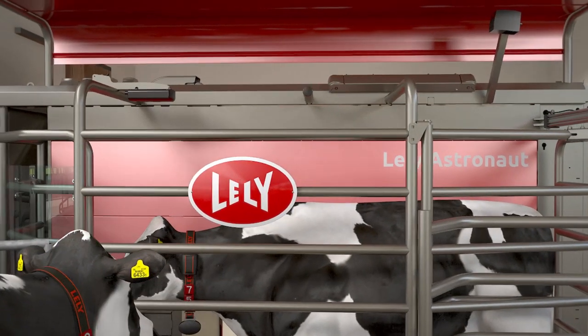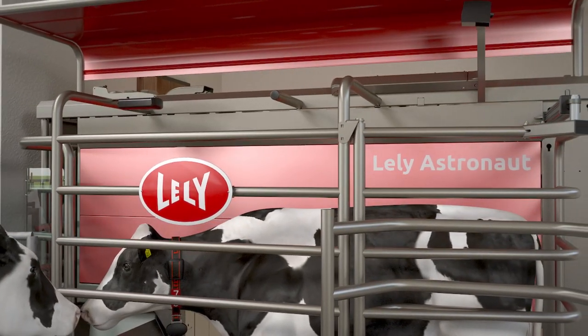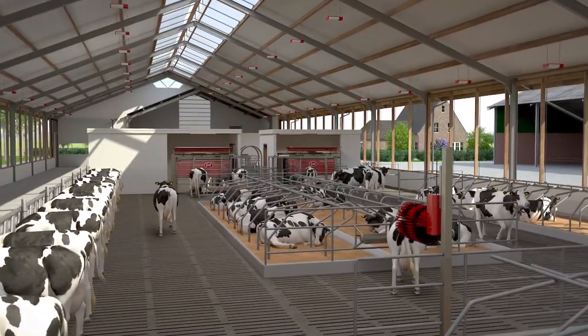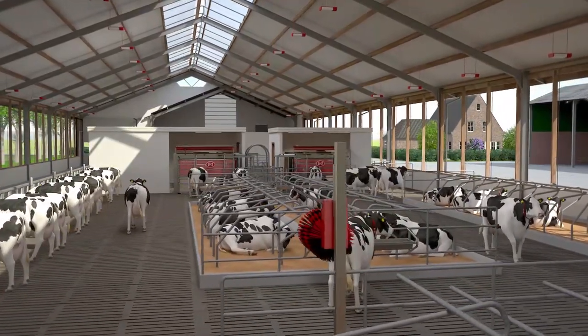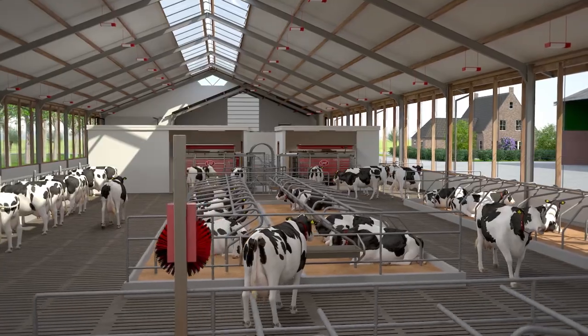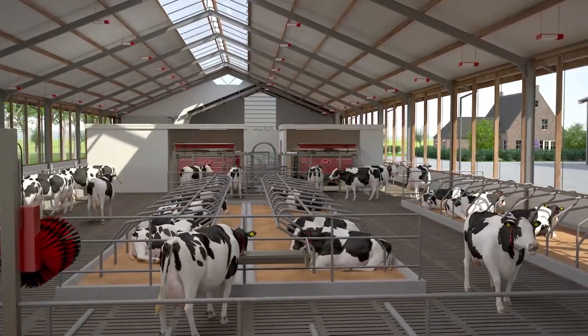The success of the Lely Astronaut milking robot is based on the principle of free cow traffic. This means that the cow is free to eat, drink or rest, and to let herself be milked.